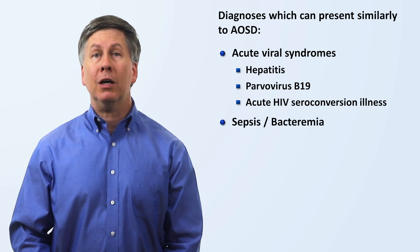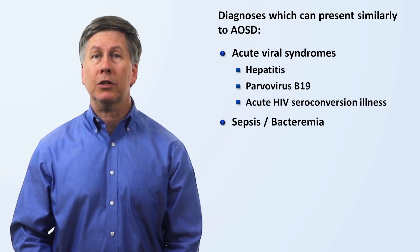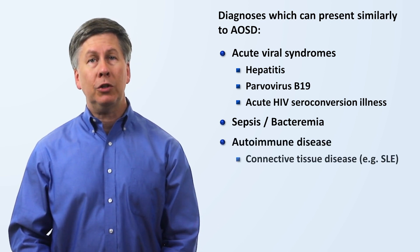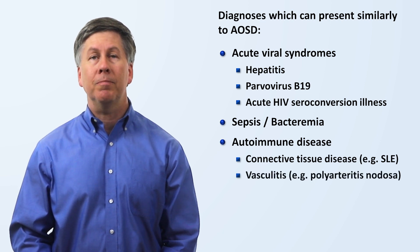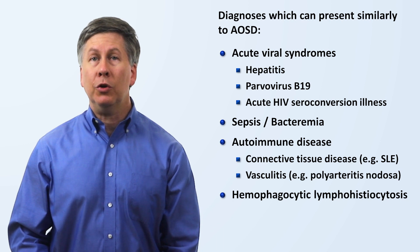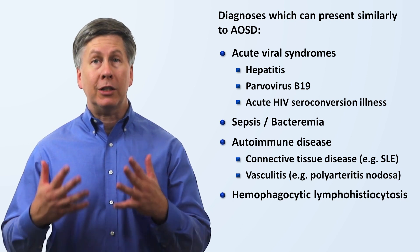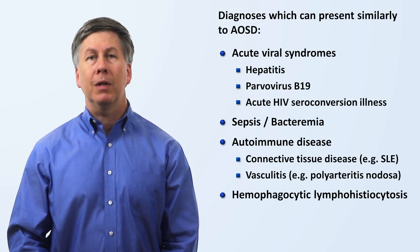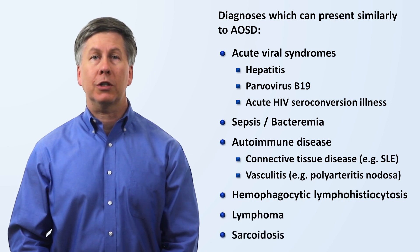Sepsis and bacteremia including subacute endocarditis. Autoimmune disease including connective tissue diseases and vasculitis. The aforementioned hemophagocytic lymphohistiocytosis, which is not mutually exclusive of Still's disease. Lymphoma and sarcoidosis.